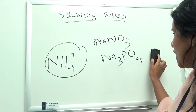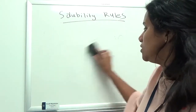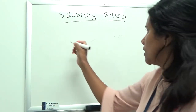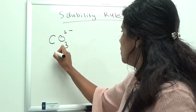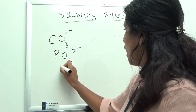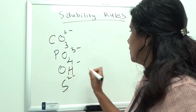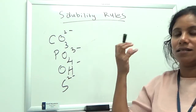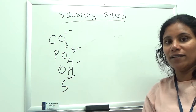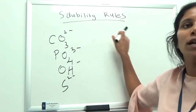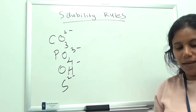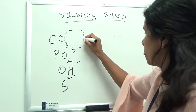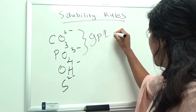The insoluble anions are carbonate, phosphate, hydroxide, and sulfide. However, there are exceptions. For carbonate and phosphate, the exceptions are Group 1 metals and ammonium — meaning potassium carbonate, for example, is soluble. So for both carbonate and phosphate, Group 1 cations and ammonium make those compounds soluble.